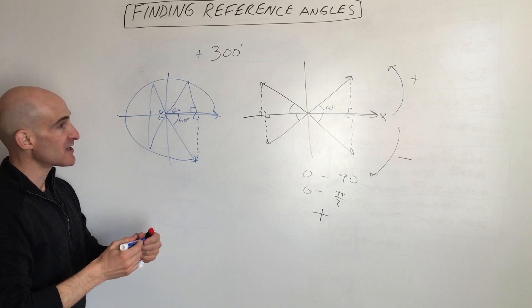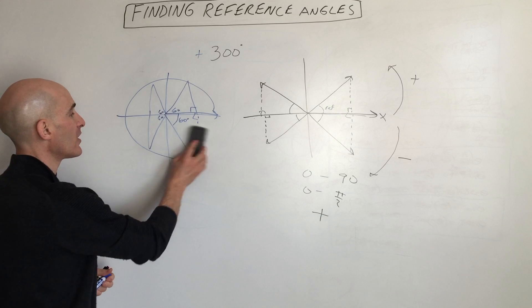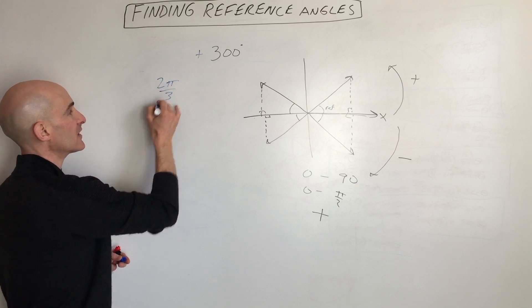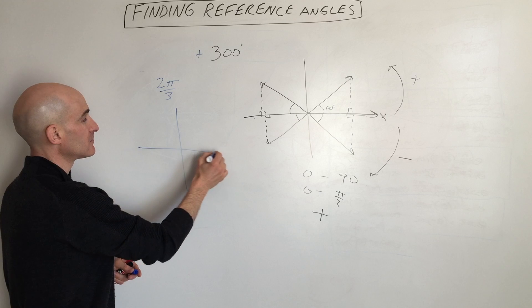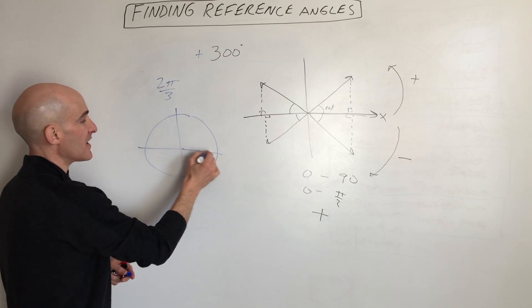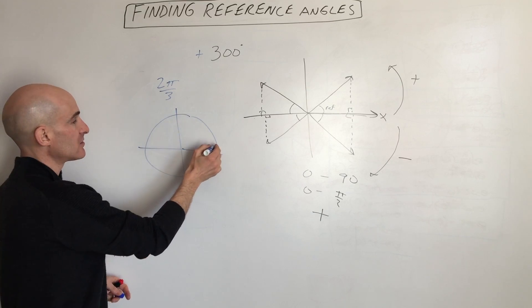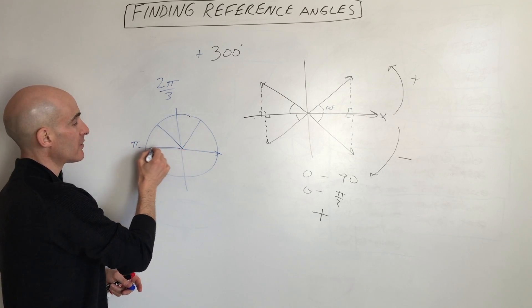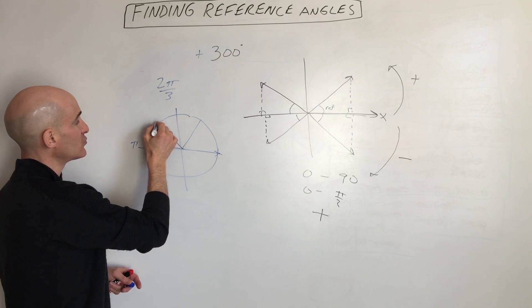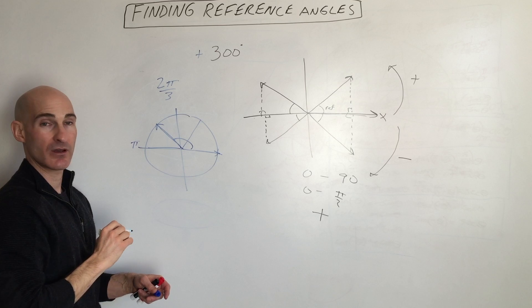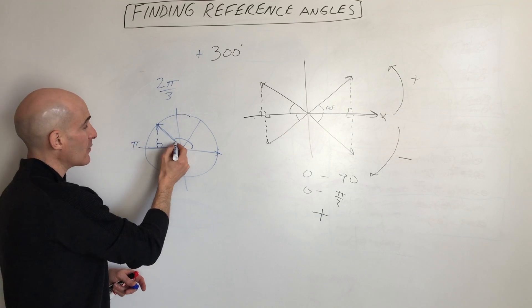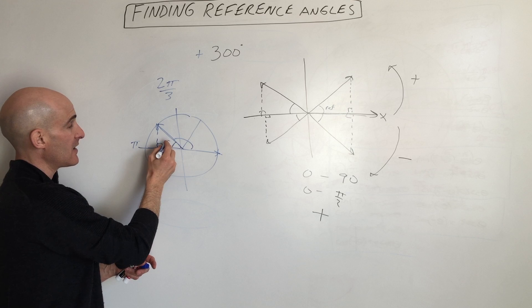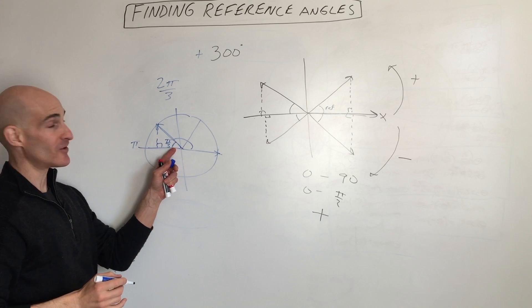Let's do one with radians. Say we want to find the reference angle for 2pi over 3. We start at the positive x-axis — it's a positive angle so we go counterclockwise. Since pi is 3pi over 3, we get 1pi over 3, 2pi over 3, and we end up there. We drop a perpendicular to the x-axis, and the angle formed between the x-axis and the terminal ray is pi over 3. That's our reference angle.